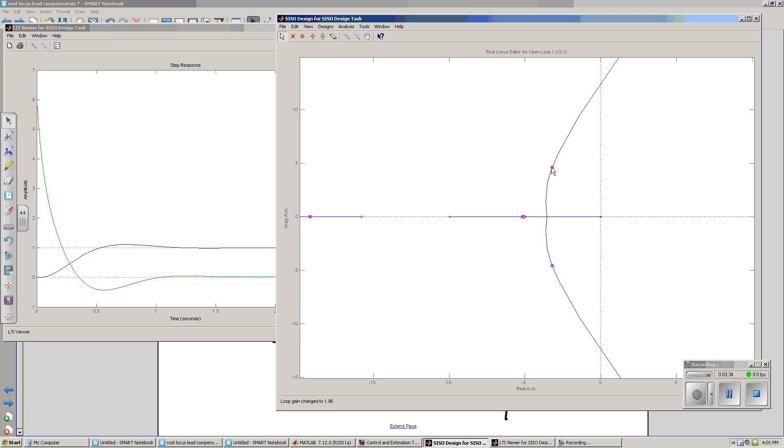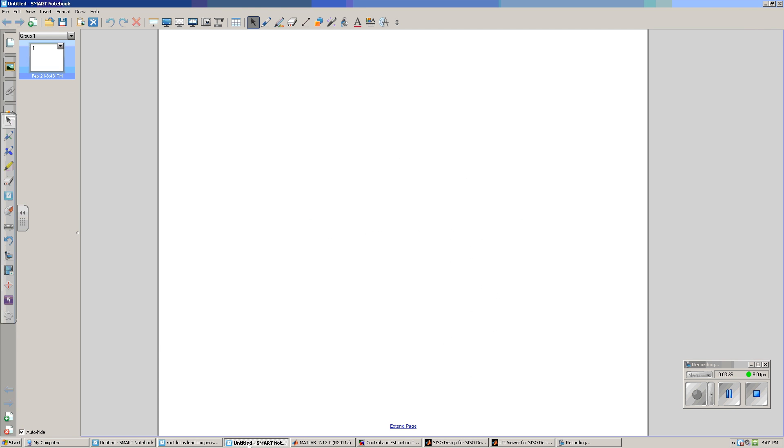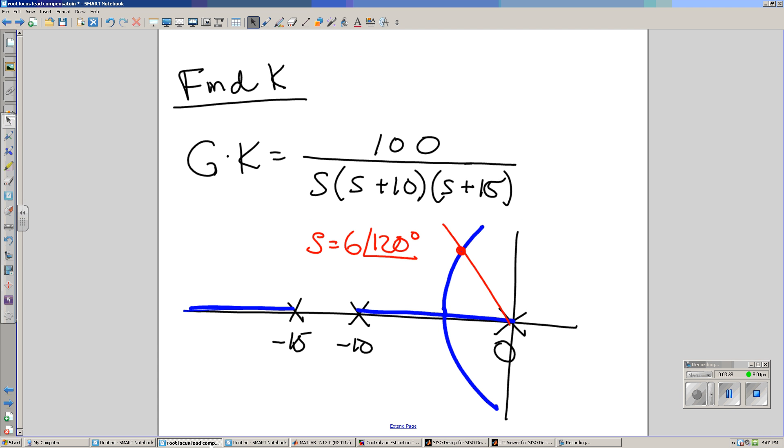Mathematically, you can see that by taking your new system. I've canceled the pole at minus 5, so I haven't drawn it in. Draw the root locus for the new system with poles at 0, minus 10, minus 15. Find the spot on the root locus with your desired damping ratio, right here.